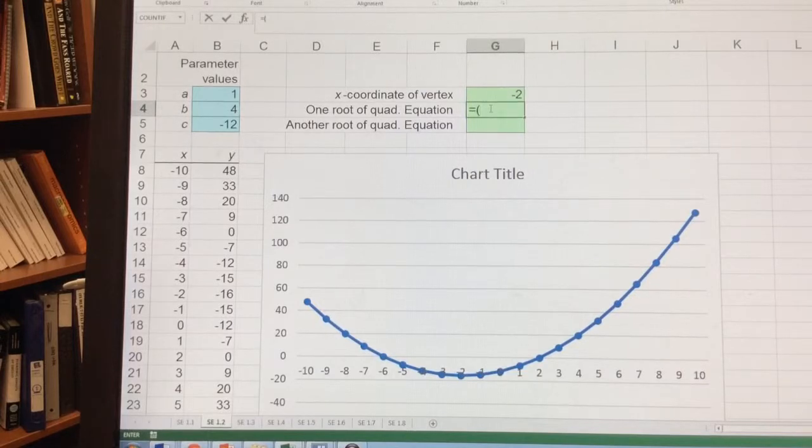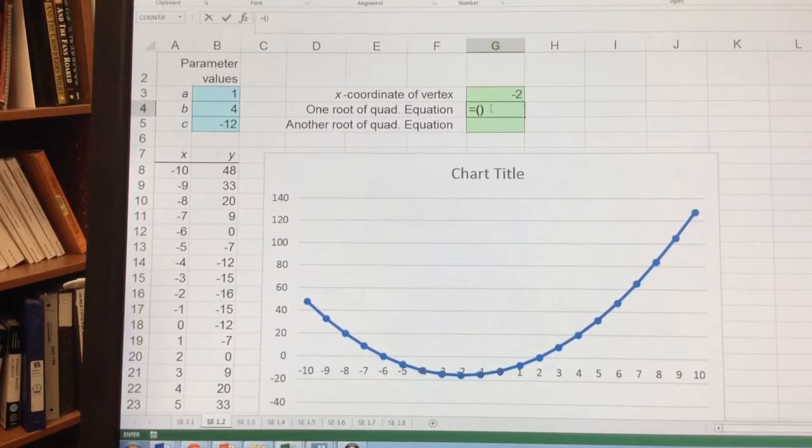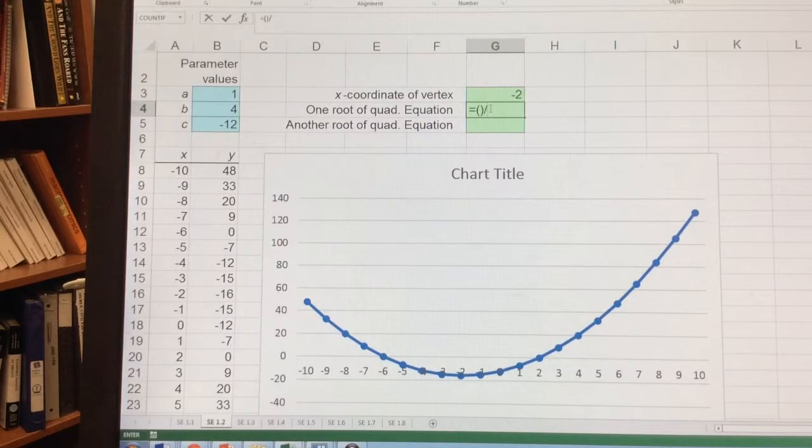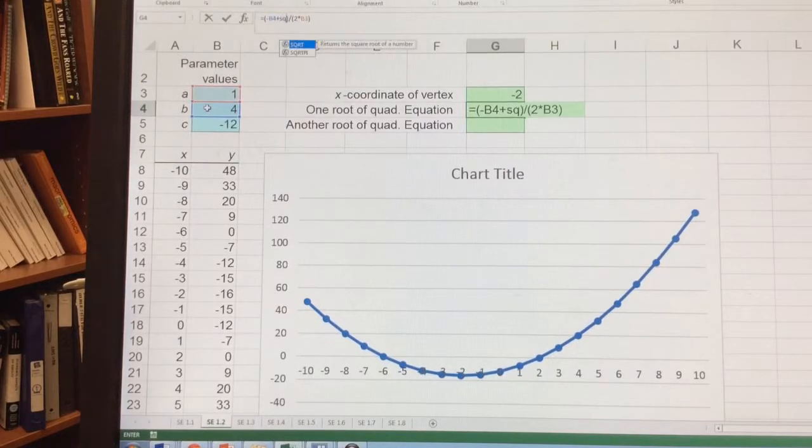Now I'm going to put this whole, start with a parenthesis, because the whole thing needs to be divided by all over 2 times a. So we're going to start with that. And now I need to make sure I put in this parenthesis what I want. So I want negative b, and I'm going to start with plus the square root. So I do sqrt and start a parenthesis.